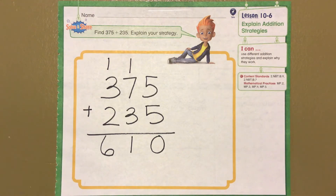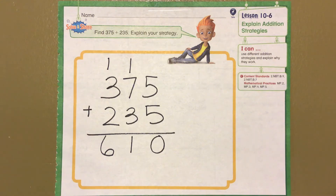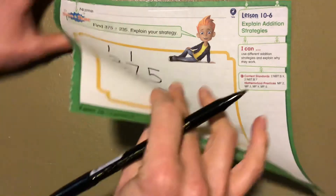I added the ones first, then I added the tens, and I added the hundreds, all using regrouping.